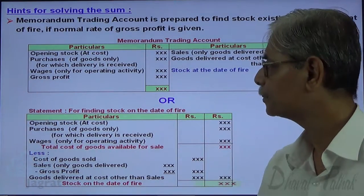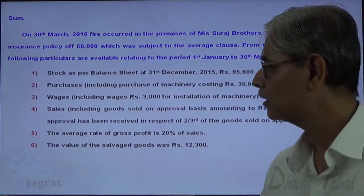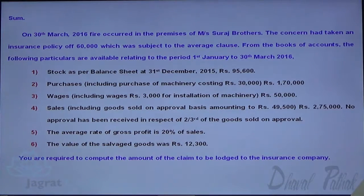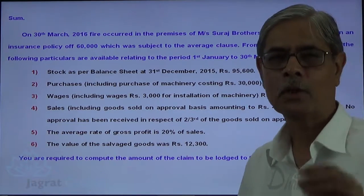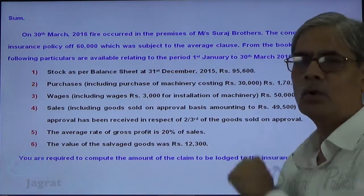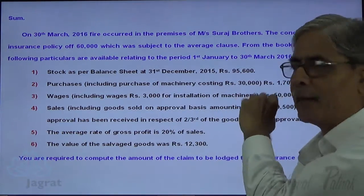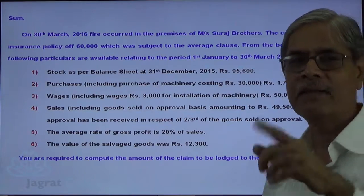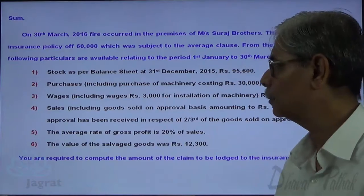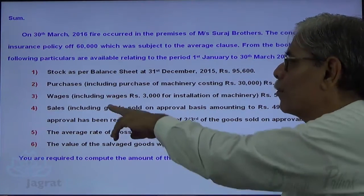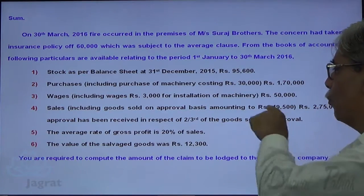Now let us start with the sum. Read it carefully. Let me say a few points about this sum. Opening stock is at cost. Purchase includes purchase of machinery — machinery is a capital expenditure, so it should be removed. $1,700,000 minus $30,000 will be recorded as purchases in this Memorandum Trading Account. Wages include $300,000 installation charges, so $50,000 minus $3,000 are the wages for operating activity. Sales includes goods sold on approval of $49,500.